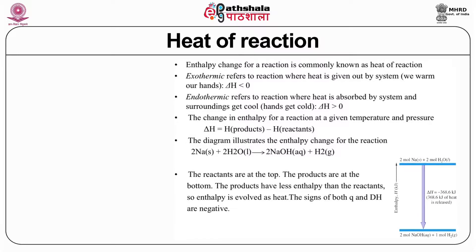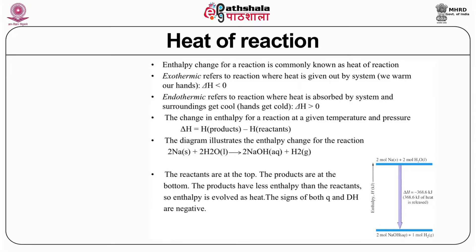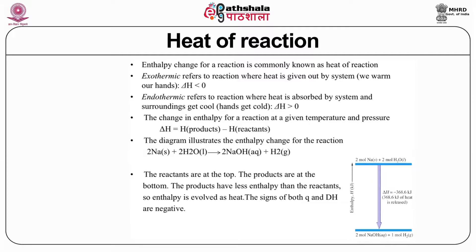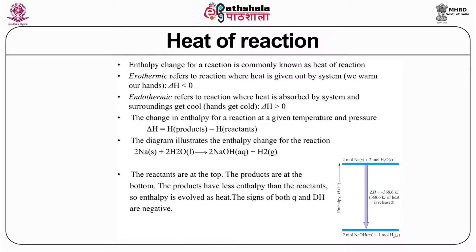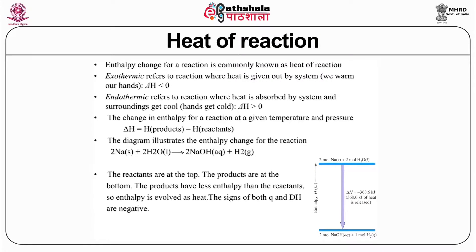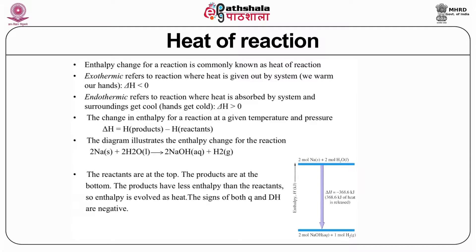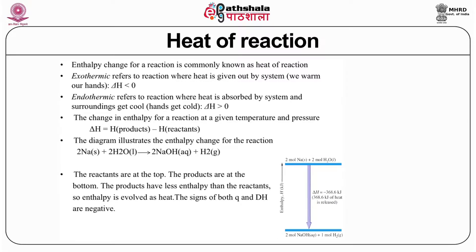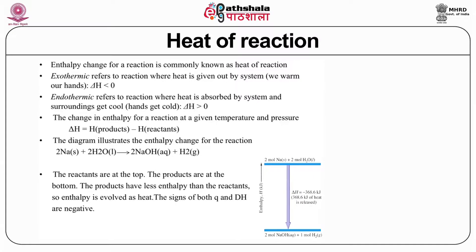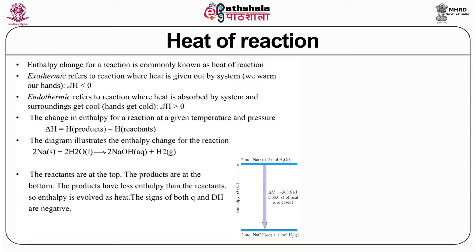The enthalpy change of a reaction is commonly known as heat of reaction. Exothermic refers to delta H less than zero. Delta H equals the heat of products minus the heat of reactants. An example: sodium plus water gives a change in energy of delta H equal to minus 368.6 kilojoules, meaning that much heat has been released. The products have less enthalpy than the reactants, so enthalpy is evolved as heat, and both Q and delta H are negative.